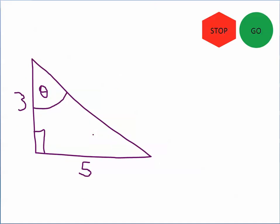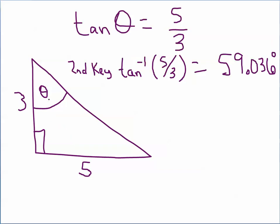Click on the stop sign. We are looking for angle theta — we know the opposite side and the adjacent side — which means we're dealing with the tangent function. The tangent of theta is exactly equal to 5 divided by 3. Using the second key for the inverse tangent of 5/3, theta is equal to 59.036 degrees.